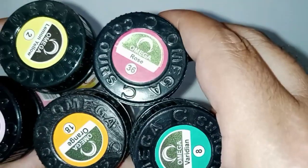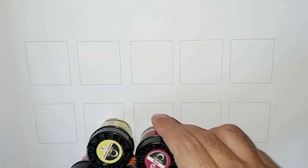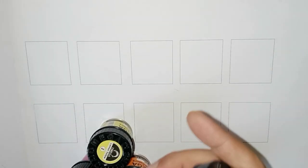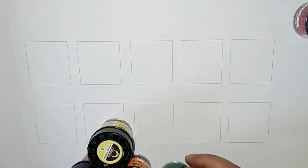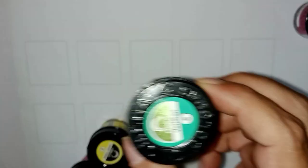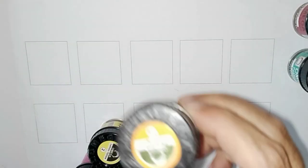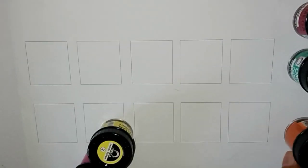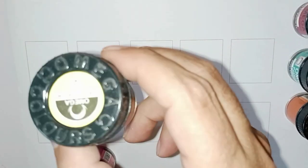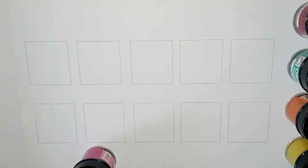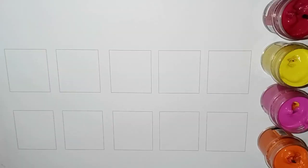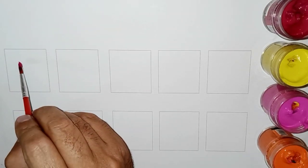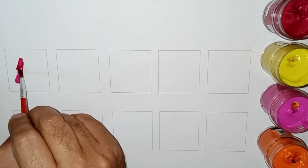Colors. Color names: red color, green color, orange color, yellow color, pink color. Which color? Red color. A, A for...